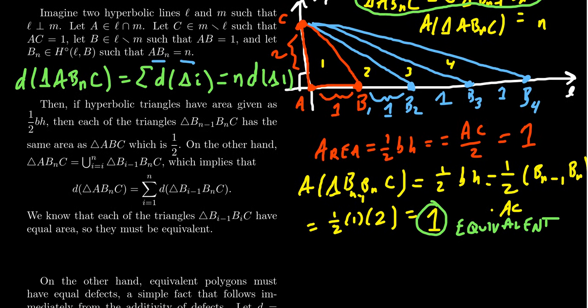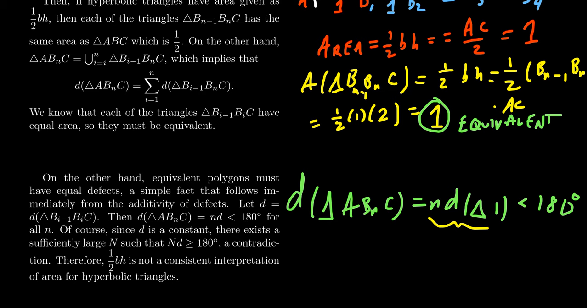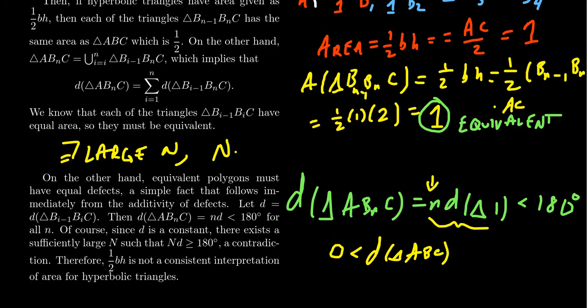So if we consider this defect, the defect of our triangle A, B, N, C, it's equal to n times the defect of the first triangle, triangle 1. But we also know that defects are strictly less than 180 degrees in hyperbolic geometry. But consider this second piece right here. This defect, the defect D of triangle A, B, C, it itself is a positive number, a positive real number. And we're going to multiply it by n. The thing is, eventually, there exists some large number N such that capital N times the defect of triangle 1, this will be greater than or equal to 180 degrees.